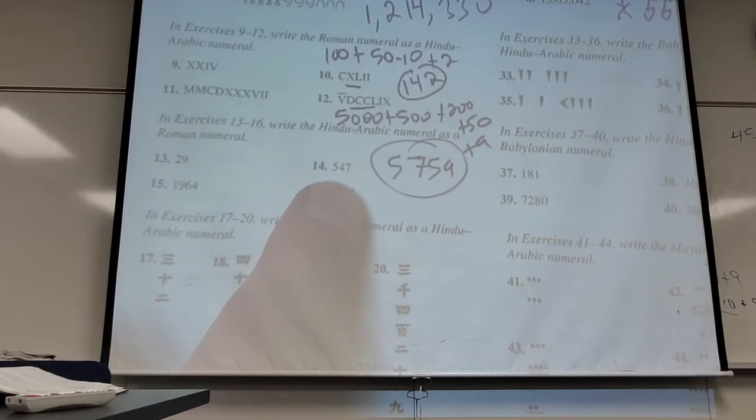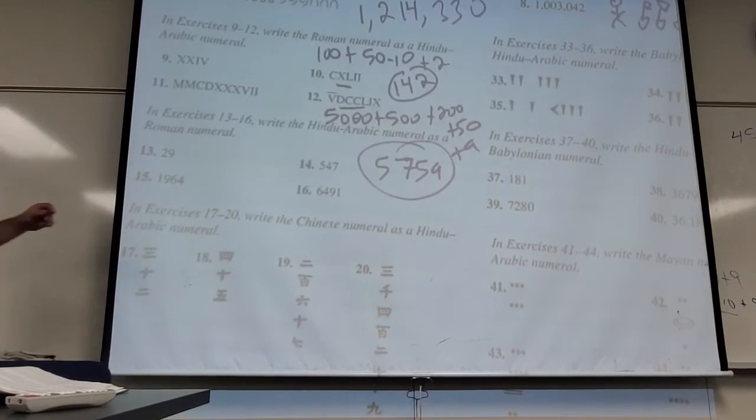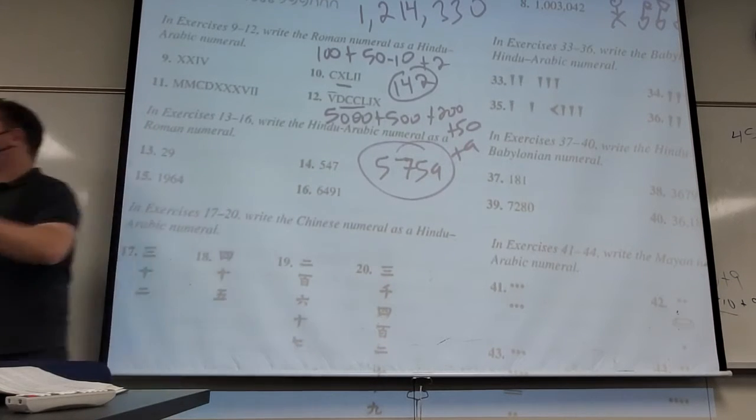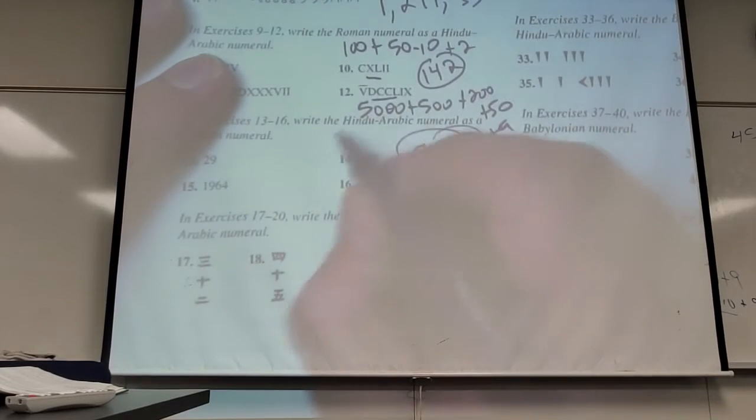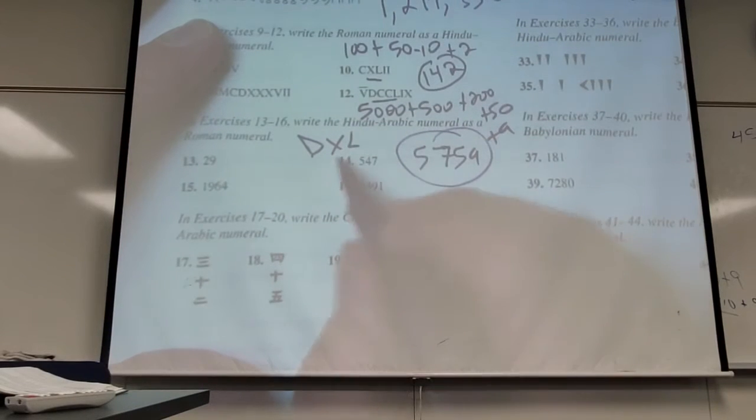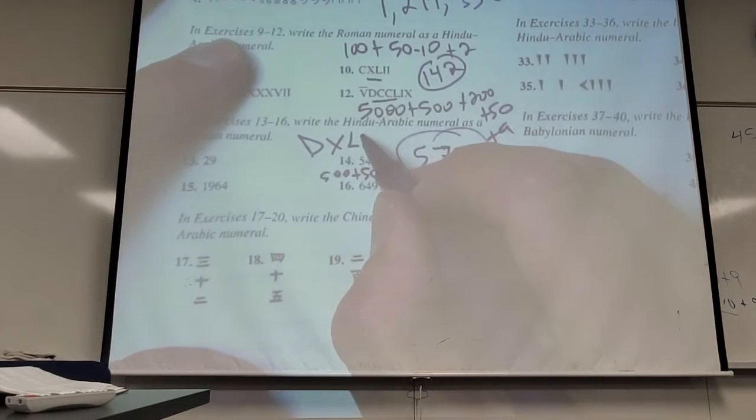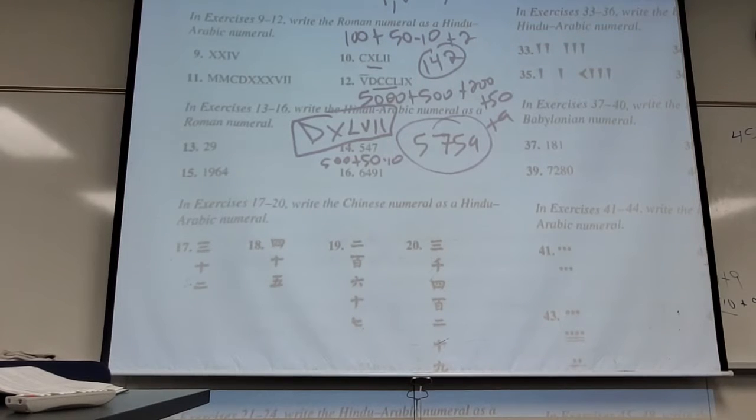And of course, you have to be able to go the other way. Now this is where, now this one is pretty simple. This one is really easy. If you go this way, it's really easy to make some mistakes. But this first one is not too bad. You got to be careful about how to make 40. So 500 is pretty straightforward. What's 500? D.